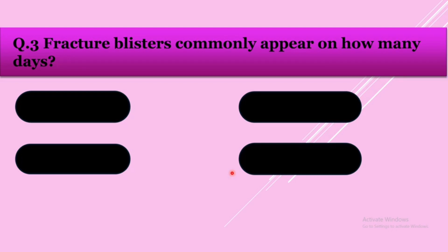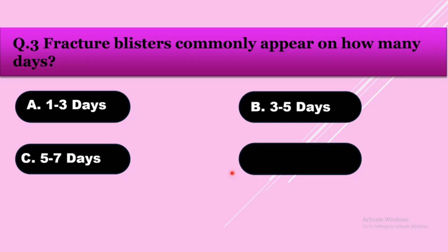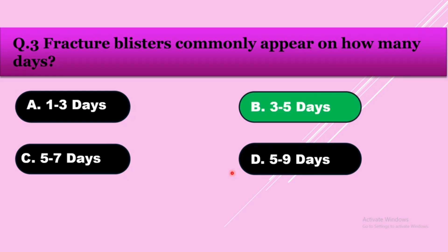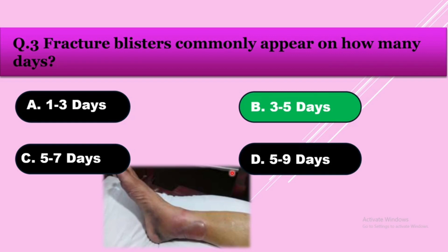Question number three: Fracture blisters commonly appear after how many days? Option A: 1 to 3 days, option B: 3 to 5 days, option C: 5 to 7 days, option D: 5 to 9 days. The answer is 3 to 5 days. Fracture blisters are similar to burn blisters. Here is the fracture blister of the ankle joint following a fracture.